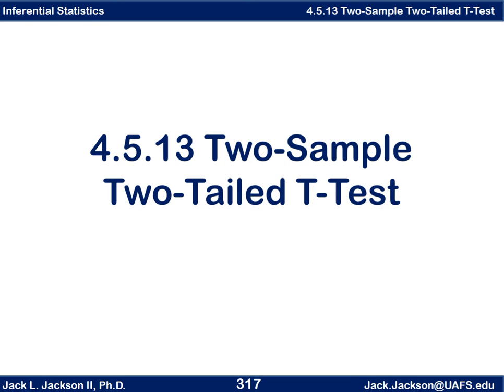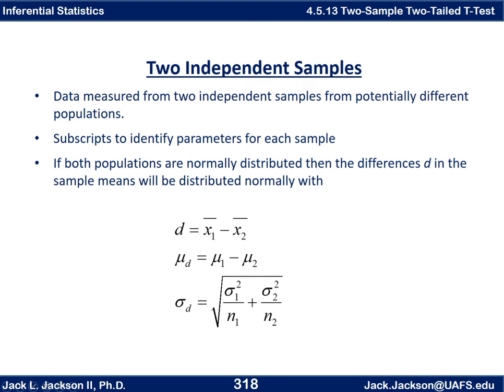In this video we're going to look at two sample techniques for forming a t-test, specifically a two-tailed version, but in general looking at two sample things. In our last video we looked at two sample dependent samples — before and after data — so we found out that really wasn't two samples. That is actually one sample of ordered pairs, and we treated that as a one sample of differences. Here we're also looking at the differences between two samples, but these two samples are independent samples and potentially from different populations.